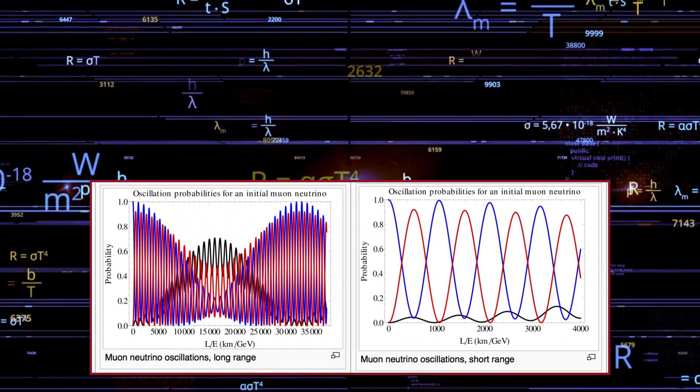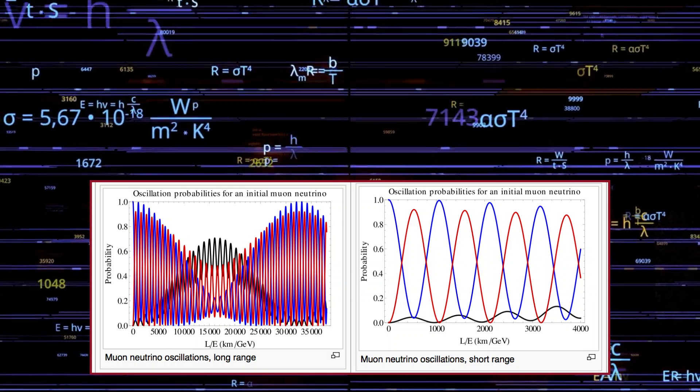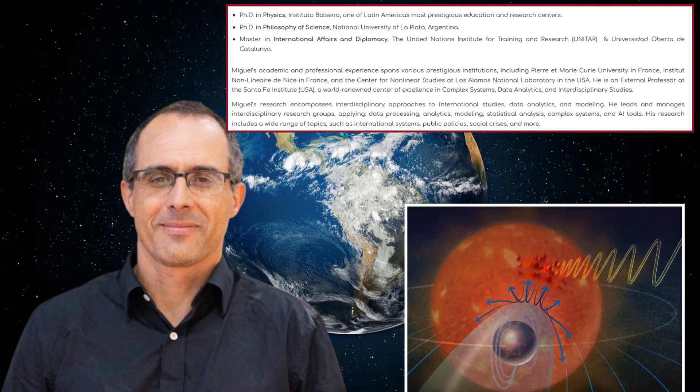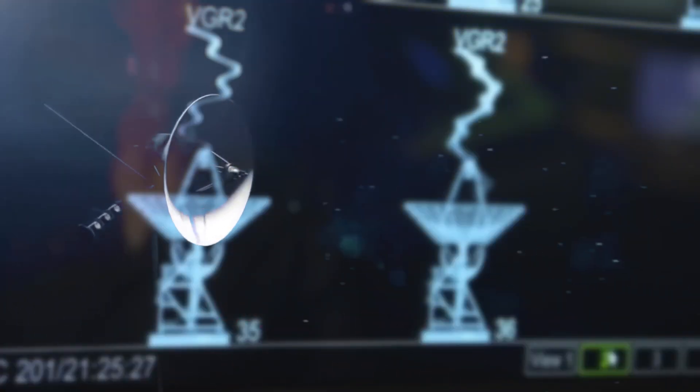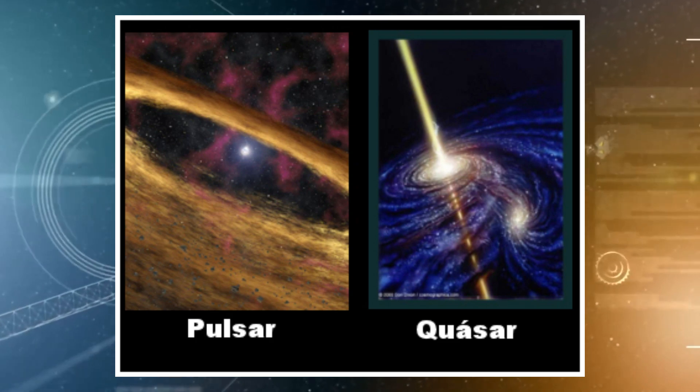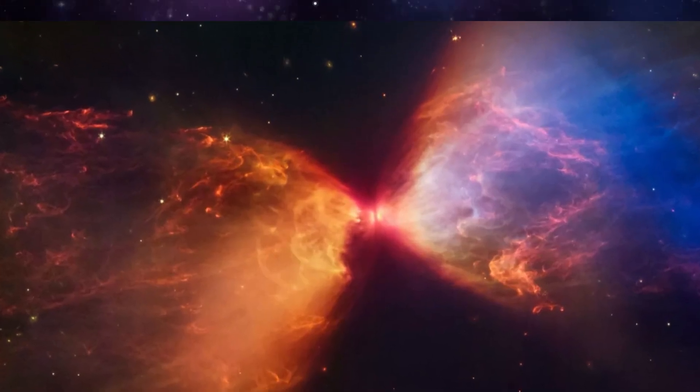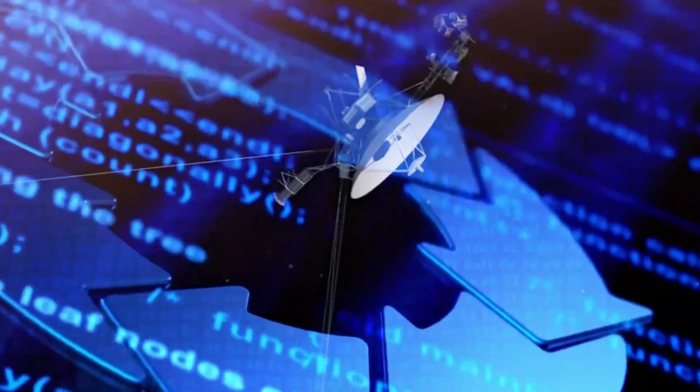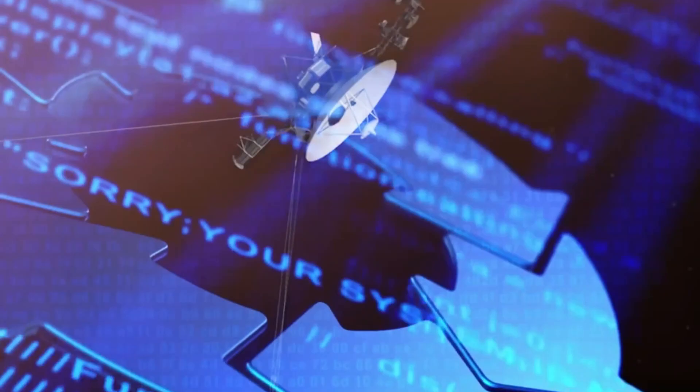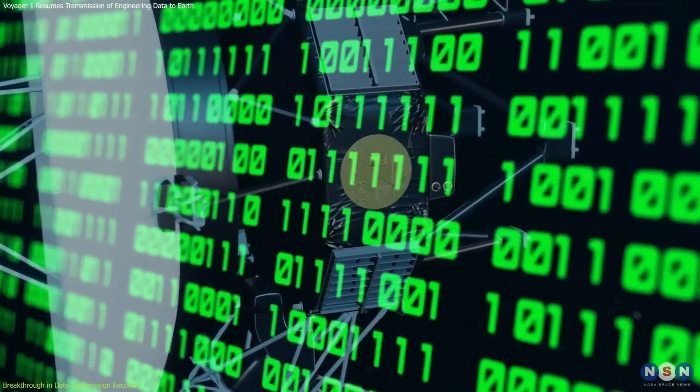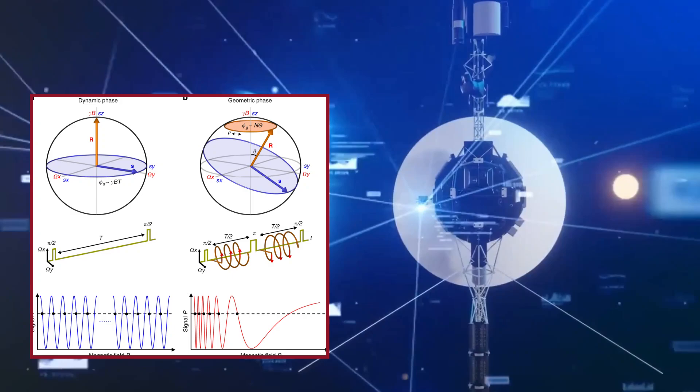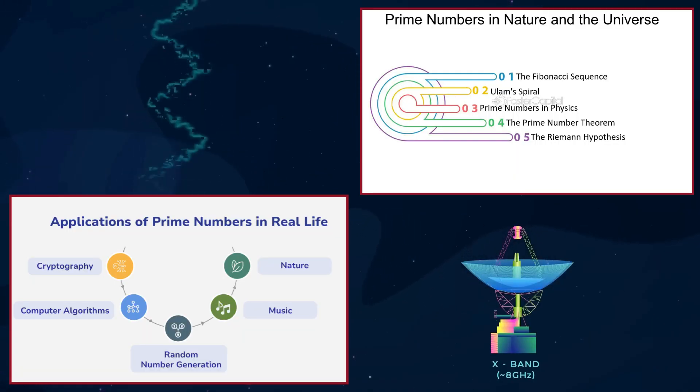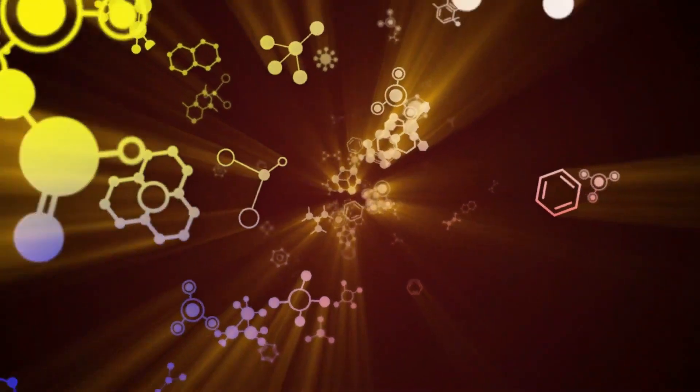Right now, there are no definitive answers, only theories. But one thing is certain: Voyager 1 has sent back a final mystery, one that could change our understanding of the cosmos. To understand why Voyager 1's final transmission is so shocking, we need to look back at its incredible journey. Launched on September 5th, 1977, Voyager 1 was designed to explore the outer planets of our solar system. It delivered the first close-up images of Jupiter and Saturn, revealed the mysteries of their moons, and gave us the first real glimpse of Titan's thick atmosphere.